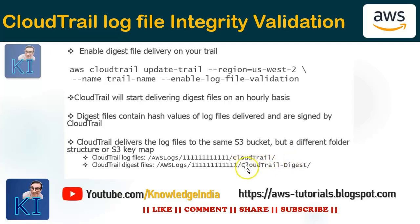On an hourly basis, CloudTrail will deliver a small digest file into the CloudTrail Digest folder. This digest file contains hash values of the log files delivered, and they are signed by CloudTrail, so the values are encrypted. It's not possible for someone to just understand and change things in an intelligent manner. These digest files get automatically generated and we use them to later validate the integrity.